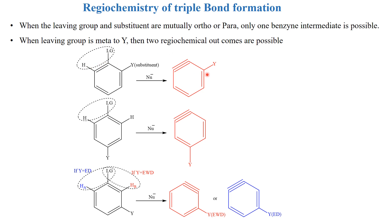In the first case, there is only one possibility of the leaving group and hydrogen being eliminated, so a triple bond will be formed at the second position relative to the substituent. In the para case, there are two types of hydrogen on either side of the leaving group, but these two hydrogens are similar, so there is only one possibility of the benzyne intermediate. But if the leaving group and the substituents are at meta position to each other, then there are two possibilities of benzyne intermediate.